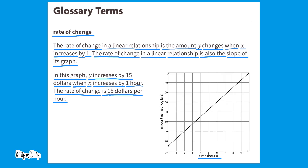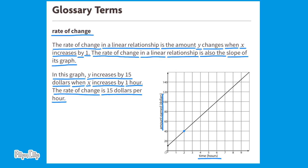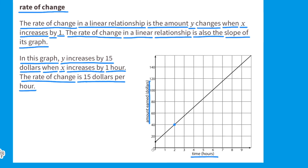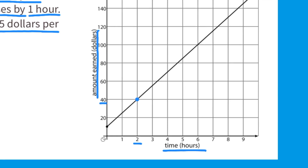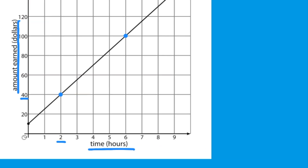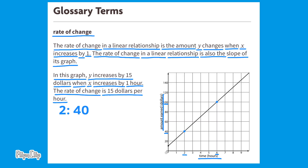Time in hours is the horizontal axis, or the x-axis, and the amount earned in dollars is the vertical axis, or the y-axis. Let's take a closer look to see how this line represents the rate of change. I'll put a point at the coordinates 2 and 40 — two units to the right along the x-axis and 40 vertically on the y-axis. I'll place the second point at coordinates 6 and 100. The first point represents 2 hours and $40, and the second point represents 6 hours and $100.